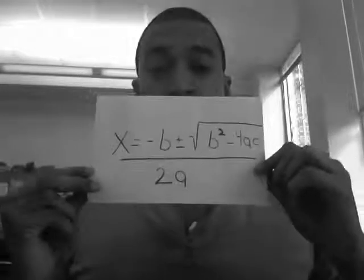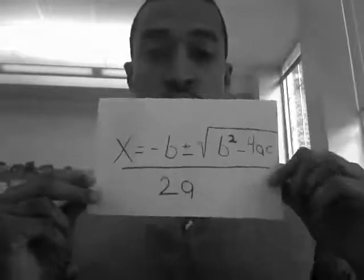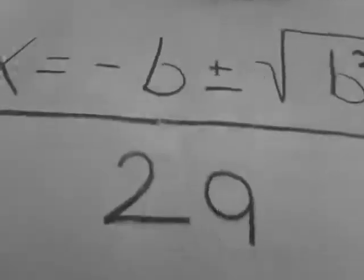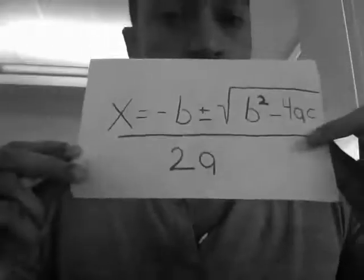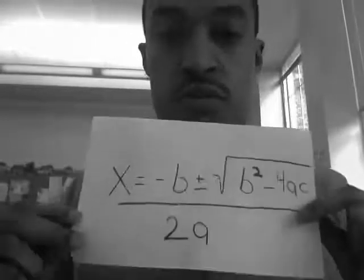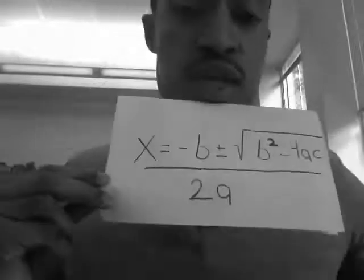Quadratic Formula. X equals negative B, plus or minus the square root of B squared minus 4AC, all over 2A.